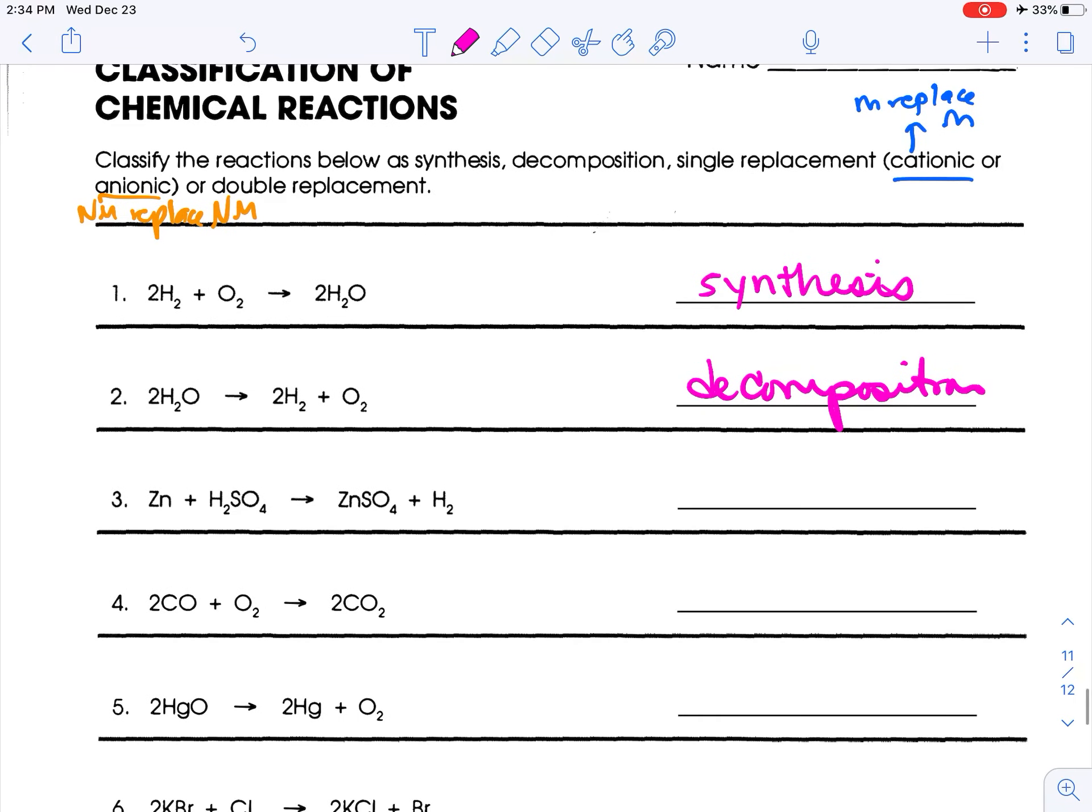The third one, I see a singleton and a compound, and then I have a new compound and a singleton. So this is a single replacement, but let's be more specific as to what kind. So who is being replaced? Zinc is replacing hydrogen. So zinc is a metal, hydrogen is not. However, if you look on reference table J, you see that hydrogen acts as a metal. So these are metals replacing metals, so this is called cationic single replacement.